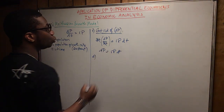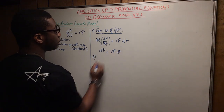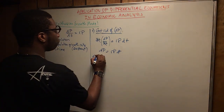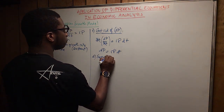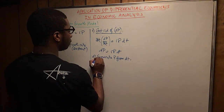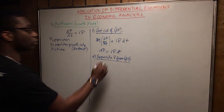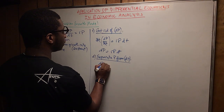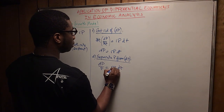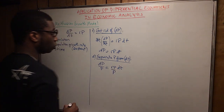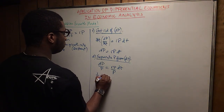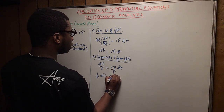Step two: we're going to separate p from dt, because we're using the separable differential equation method. We simply divide both sides by p, which gives us: 1 over p times dp equals r dt.